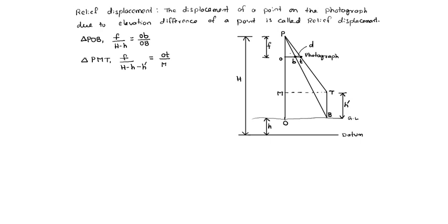Which is equal to OT divided by MT, and OB are the same. From the first triangle: F into OB equals OB into (H minus h). From the second triangle: F into OB equals OT into (H minus h minus H-dash) times OB.